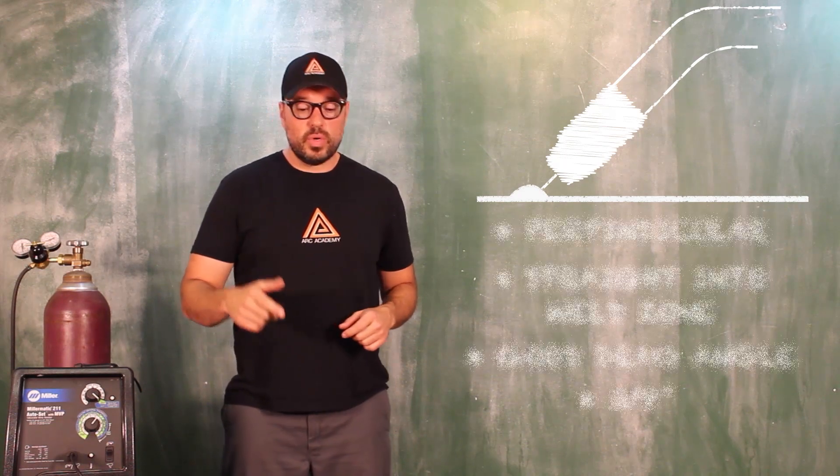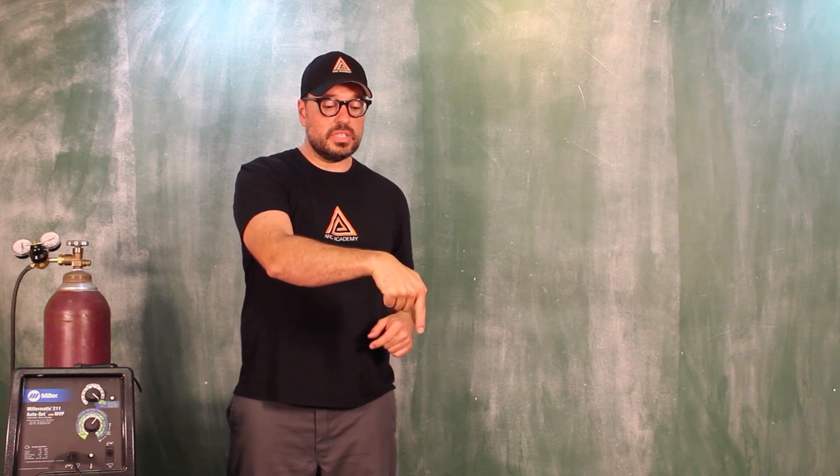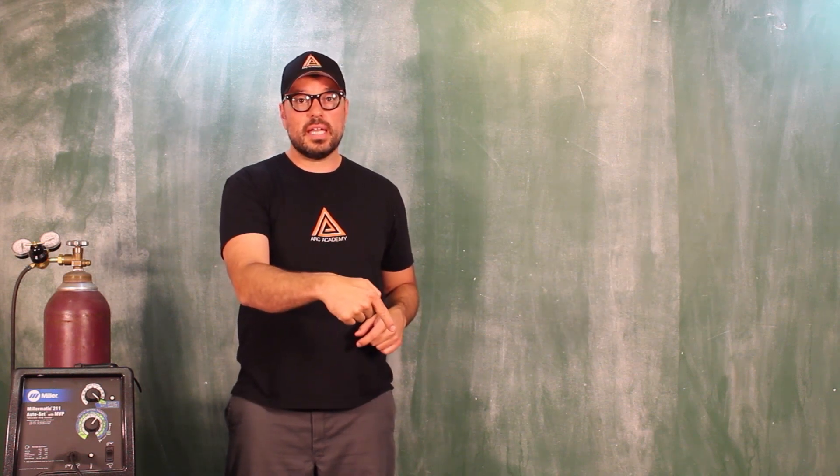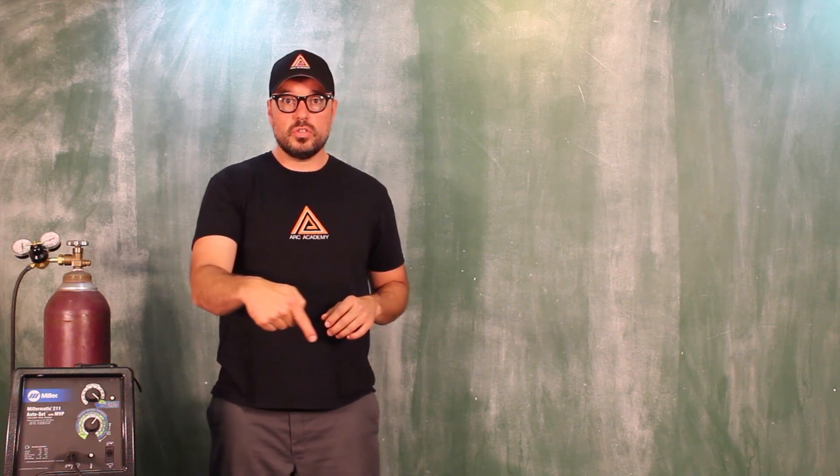But when you are setting up, if you're right-handed, you are going to put your perpendicular down, you're going to drop into a drag angle—we're going to stick with 45 degrees—and we're going to draw to the right.